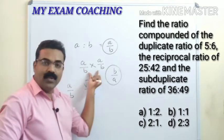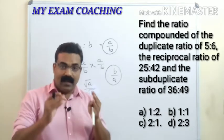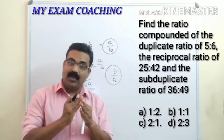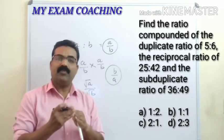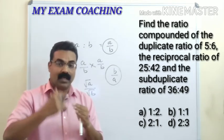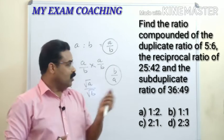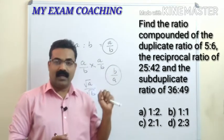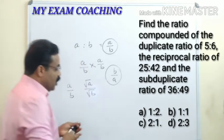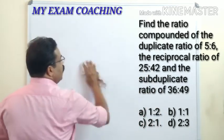So you now understand duplicate ratio, reciprocal ratio, and sub-duplicate ratio. Duplicate ratio means you multiply it two times; sub-duplicate means you reduce it to the square root; reciprocal means numerator and denominator swap — upside down. Once you understand this concept it is very easy to solve these types of questions. Now let us go to the question.